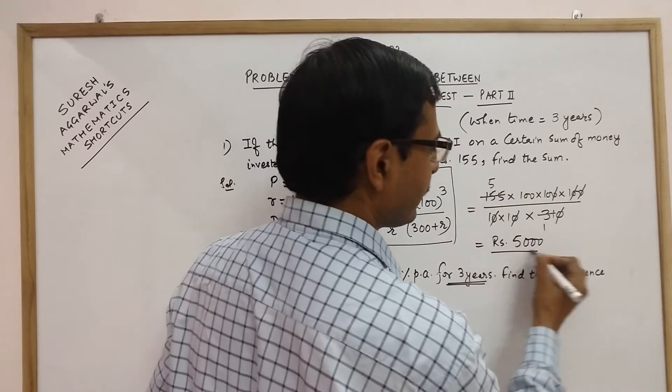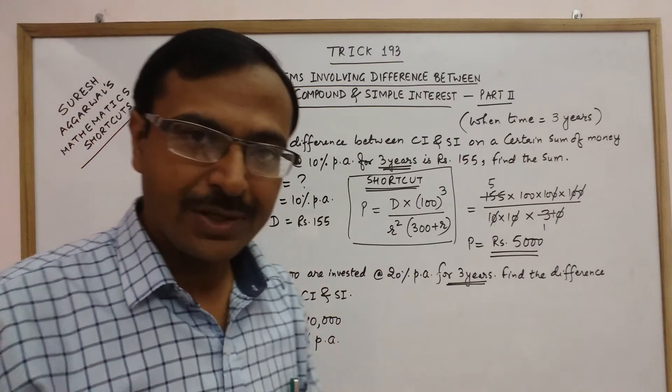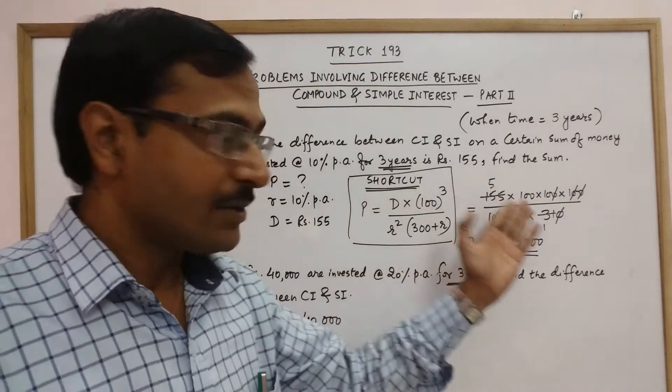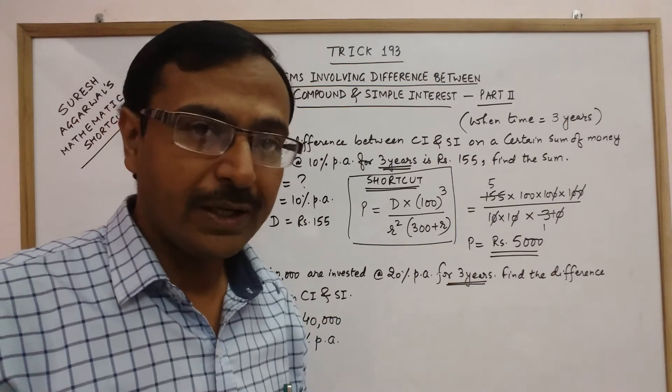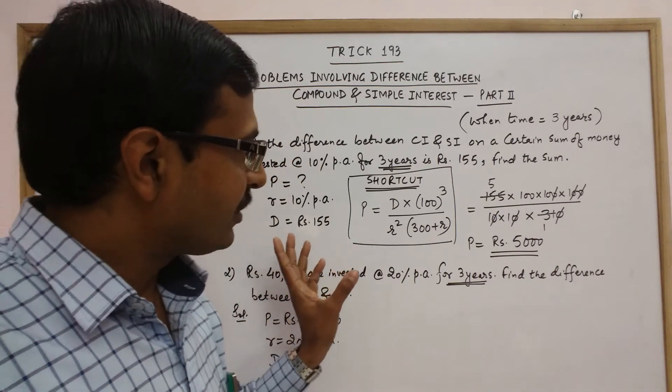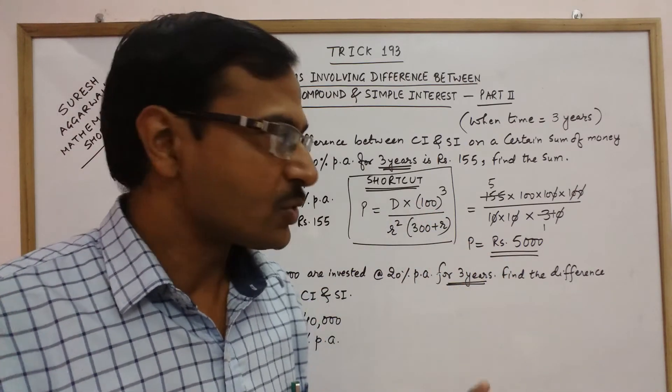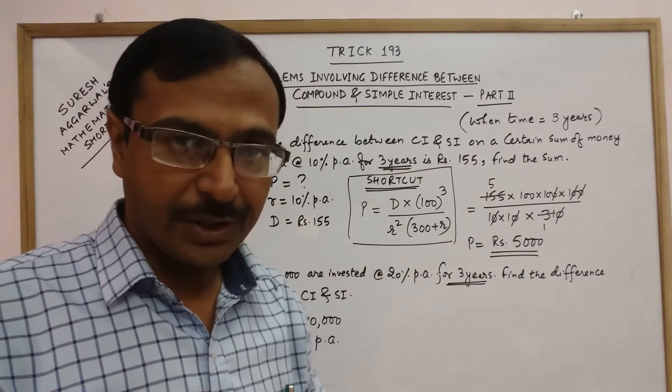So rupees 5000 is the final answer. You see how much time we consume for applying this shortcut, it will be only 3 to 4 seconds. And traditional method and this method cannot be compared when you are solving these kind of problems in competitive exams.